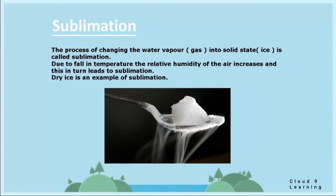Sublimation. The process of changing water vapor, i.e. gas, directly into solid state, i.e. ice, is called sublimation. Due to the fall in temperature, the relative humidity of the air increases, and this in turn leads to sublimation. Dry ice is an example of sublimation.